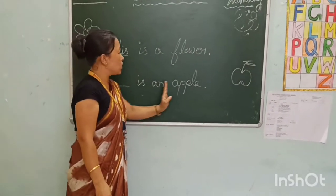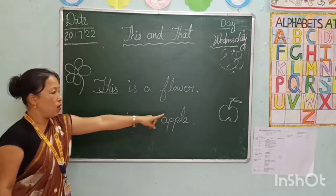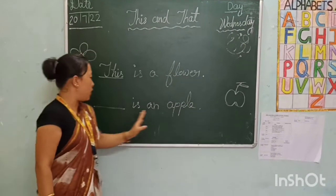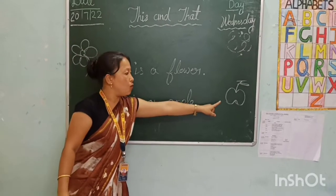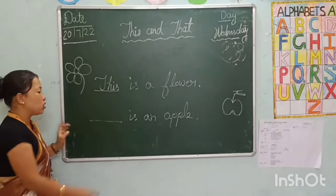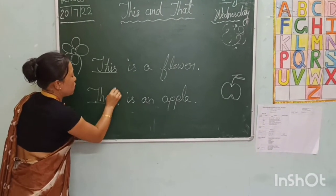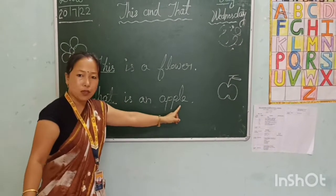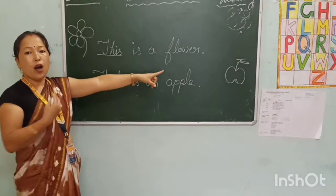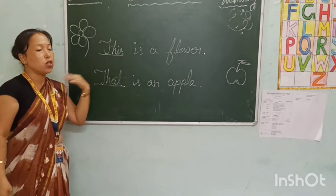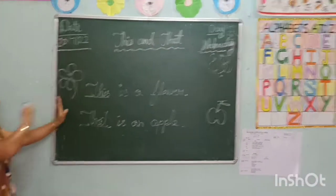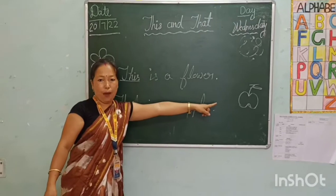Come to the next sentence: dash is an apple. We point out — that means woh hamare se door hai. Far. So we use here that. T-H-A-T. That is an apple. Because apple is far away from me. Jo apple hai woh hamare se door hai. This is a flower — yahan ek phul hai. That is an apple — wahai ek apple hai.